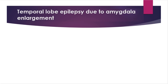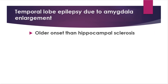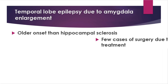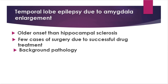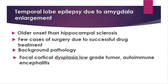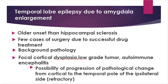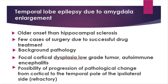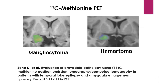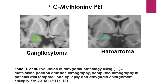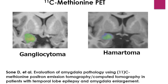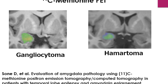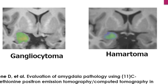Patients with temporal lobe epilepsy due to enlarged amygdala are older than those with hippocampal sclerosis. They respond well to anti-epileptic drugs and do not often lead to focal resection. Background pathology includes focal cortical dysplasia, low-grade brain tumors, and autoimmune encephalitis. The lesions may extend to the temporal pole and such cases are refractory. Carbon-11 methionine PET has been reported to be useful in detecting brain tumors in the background pathology of enlarged amygdala; if methionine PET shows accumulation, there is a high possibility of neoplastic lesions.